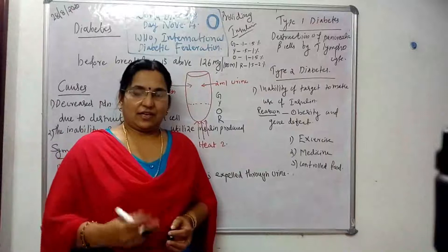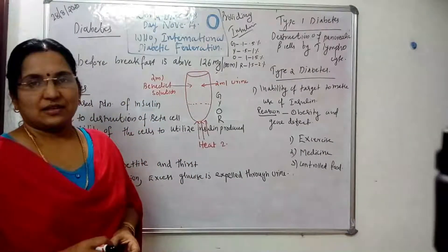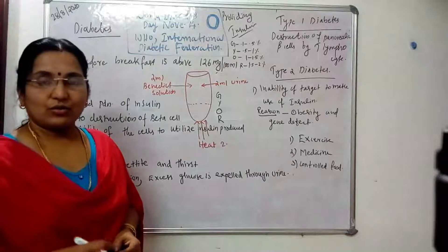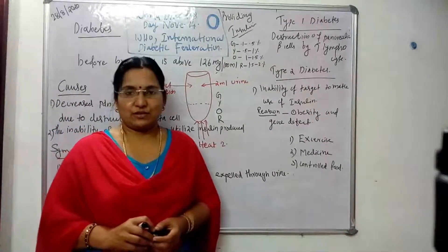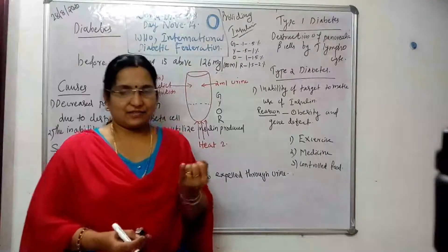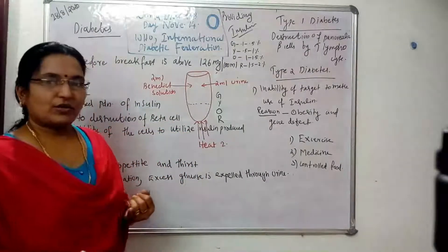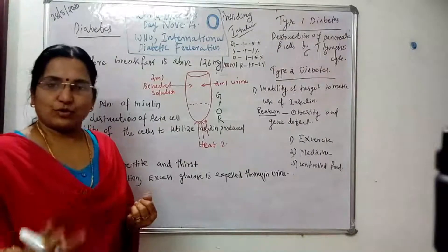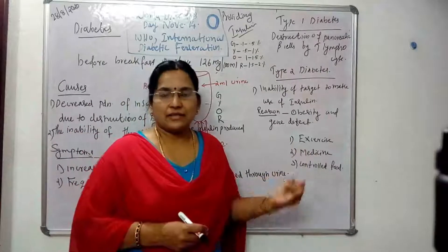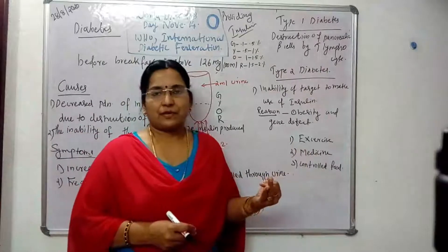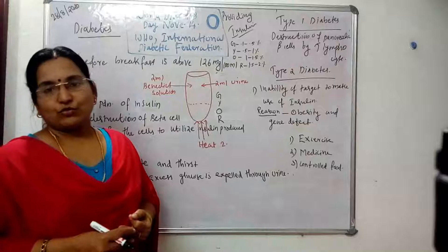Diabetes can be managed by doing exercise, which increases the production or utilization of insulin produced by beta cells. Other management strategies include taking proper medicine and maintaining controlled food intake.